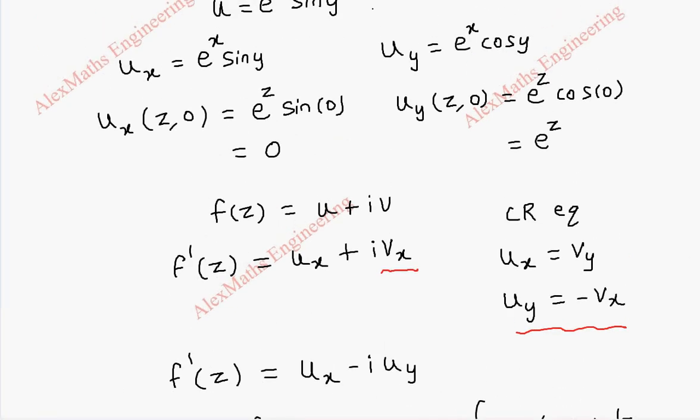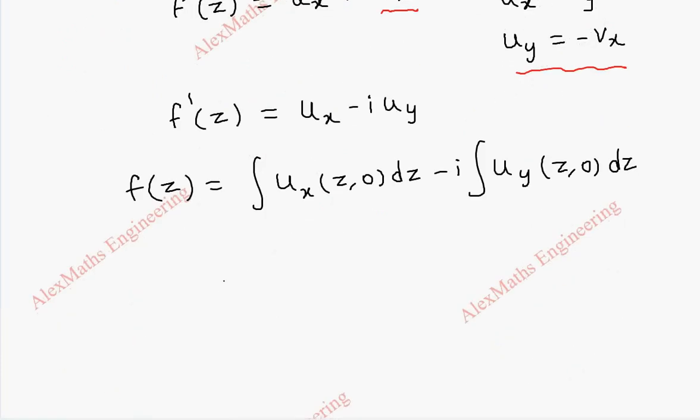Now we replace u_x as 0 and u_y as e^z. Since u_x is 0, the first term is fully 0, minus i integral e^z dz.